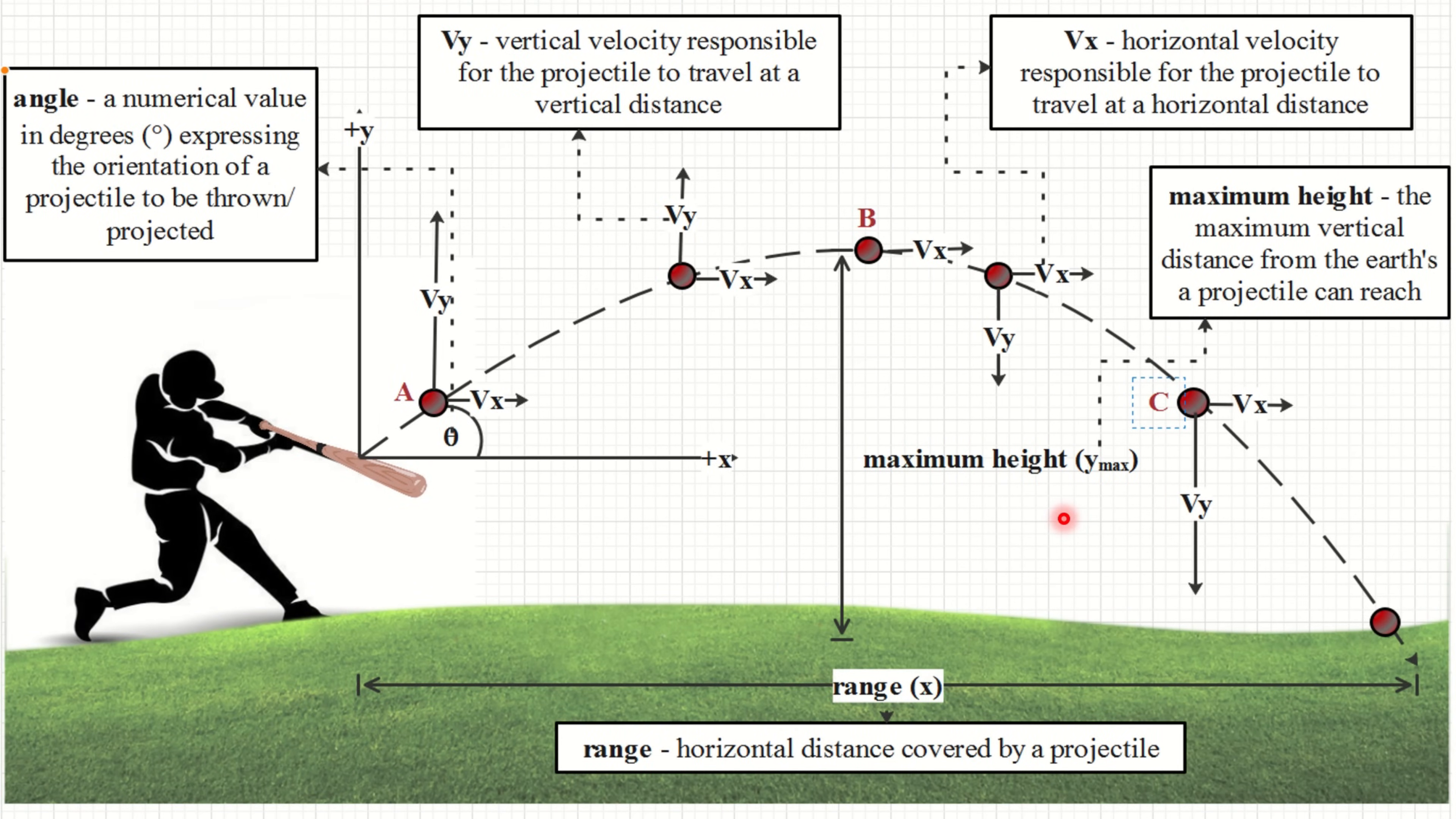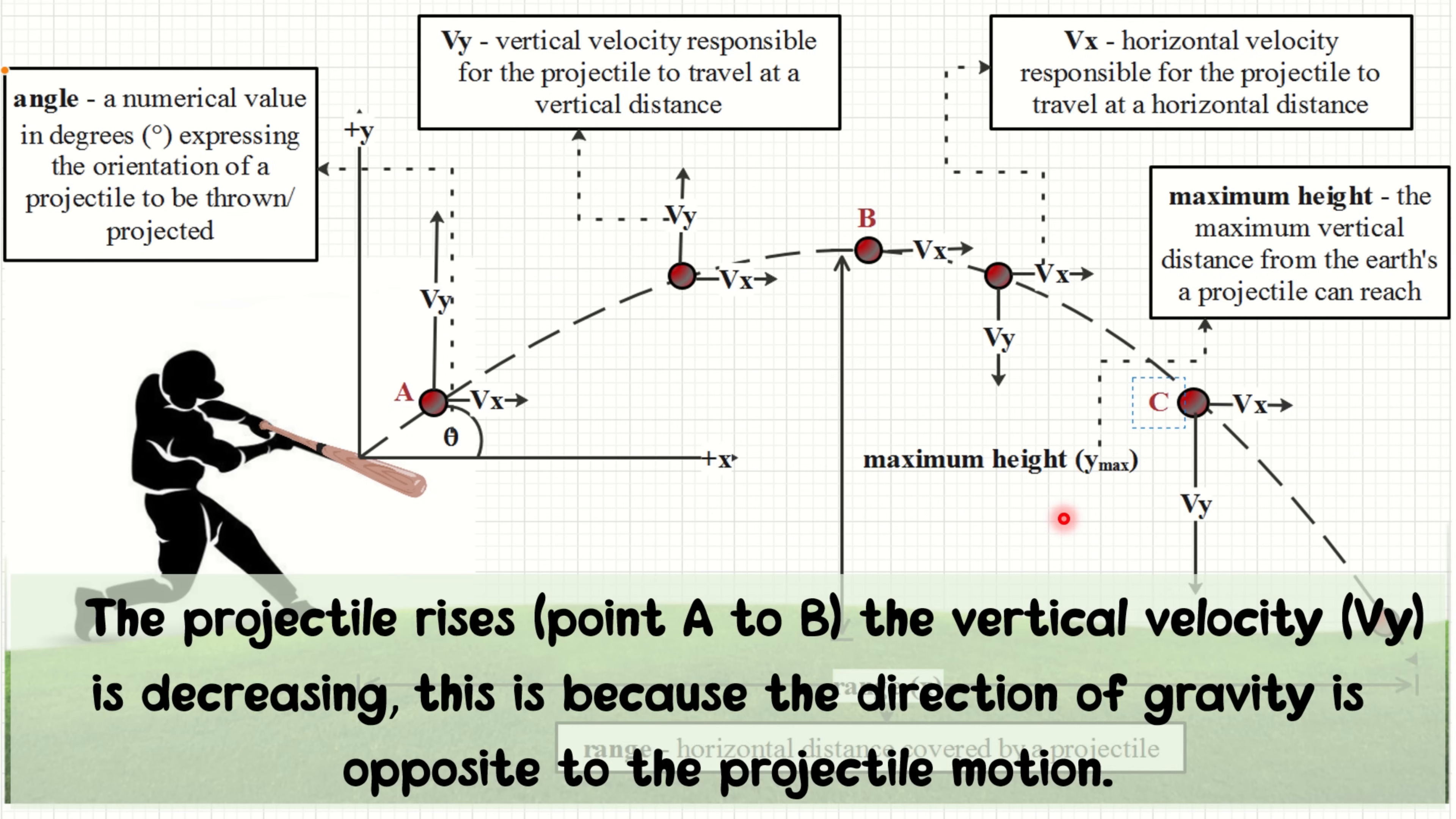First, from the picture, as you observed, the projectile rises from point A to point B, the vertical velocity or Vy is decreasing. This is because the direction of gravity is opposite to the projectile motion.